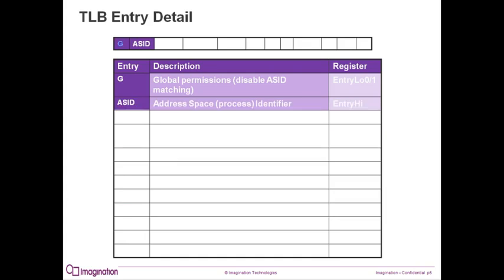The ASID is a specific identifier that is assigned by the OS to a process. This address space identifier helps to reduce the frequency of TLB flushing because it allows the mapping of up to 256 different address spaces simultaneously without requiring the TLB to be cleared on a context switch. When the G bit is not set, the TLB will concatenate the ASID and the virtual page number to find the correct entry. The ASID is stored in the entry high register.